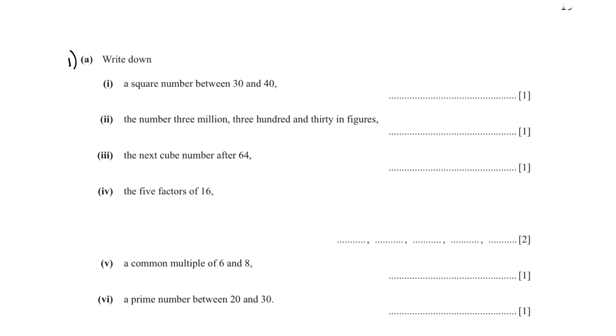These questions are from IGCSE paper 3. Question number 1: write down a square number between 30 and 40. You know that square numbers are numbers multiplied by itself, so which number when we multiply by itself will be between 30 and 40? 6 times 6 is 36. A: the number 3 million 330 in figures - very easy, one mark, 3 million 330.